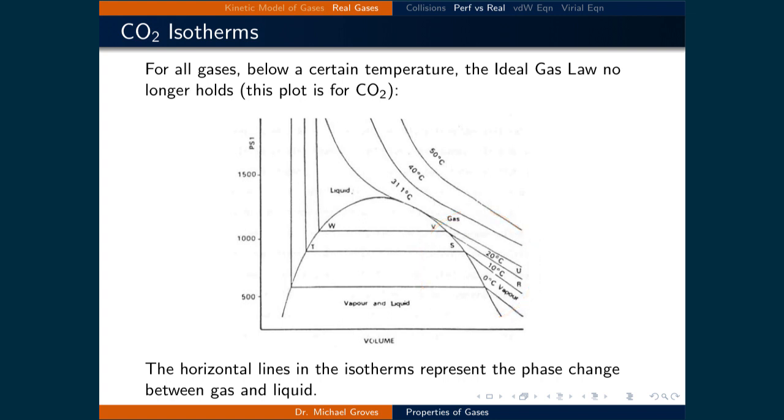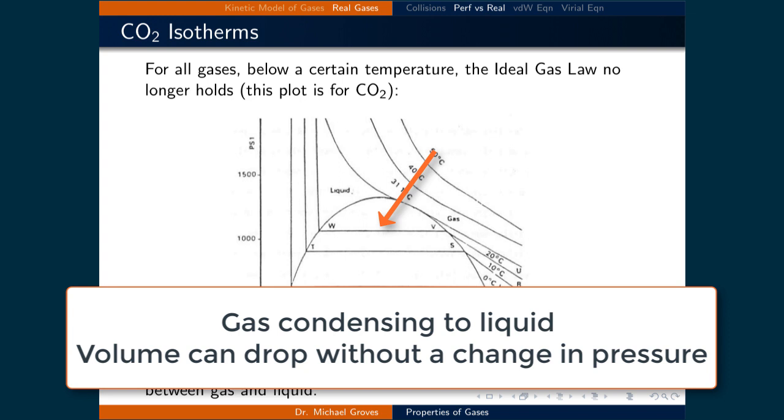In this region, both liquid and gas are present, and as the volume decreases, the gas condenses completely to a liquid. This is denoted as a horizontal line, since as the gas condenses to a liquid, it requires a lot less space, meaning that the volume can drop without the pressure changing.